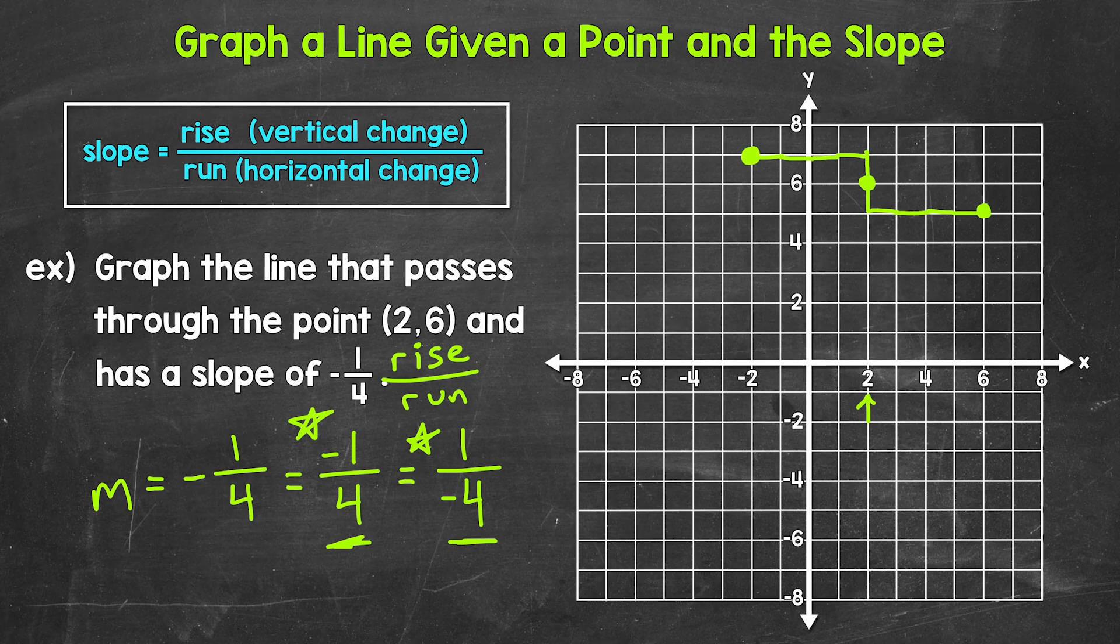Now our last step, step 3, we draw a straight line through our points. So a line through the points. And that's it. We have our line graphed.